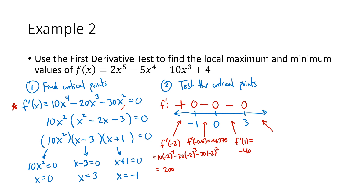Greater than three I chose five. So f prime of five — plugging five into my derivative formula — I get 3,000. All that really matters is that that's positive. Now step three: draw conclusions. You've done all this testing and computation — what does it tell you?